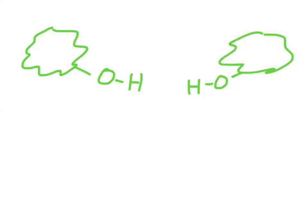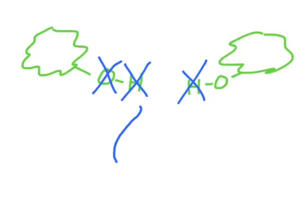Here are our two monomers and their two functional groups facing each other. Dehydration means losing water. Water is H2O, so let's get rid of one H2O molecule. We need to cross out one of the oxygens and two of the hydrogens.